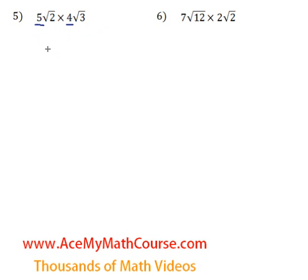5 times 4 is 20. Then we write a radical sign. 2 times 3 is 6. So we have 20 times the square root of 6, because we multiply 2 times 3 to get the 6. That's as far as we can go. We can't further simplify 20 times the square root of 6.